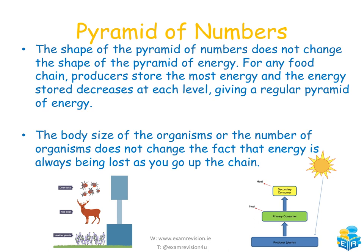The shape of the pyramid of numbers does not change the shape of the pyramid of energy. For any food chain, producers store the most energy, and the energy stored decreases at each level, giving a regular pyramid of energy. Even if the pyramid of numbers is inverted, the pyramid of energy remains the same shape — we are still losing up to 90% of energy as we go from level to level.